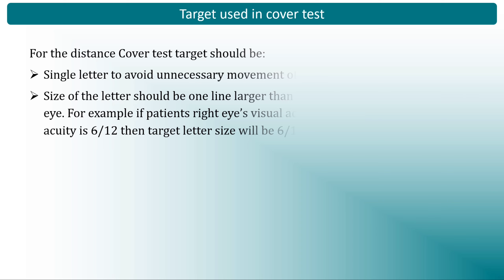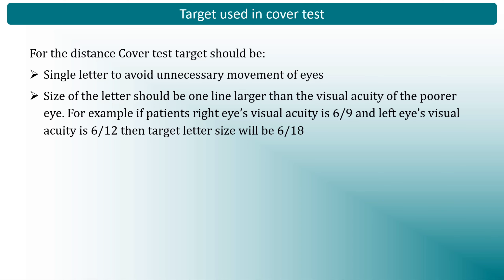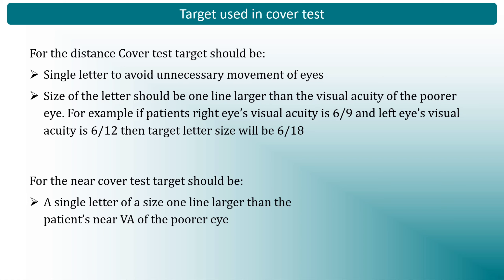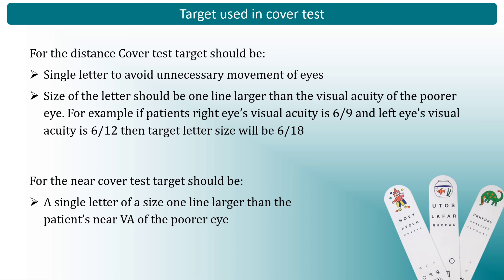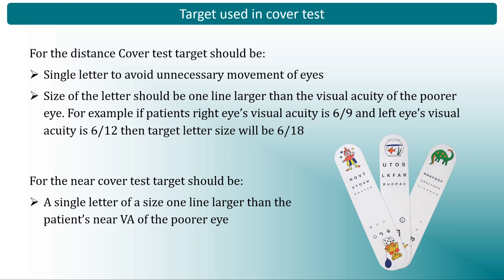For the distance cover test, the target should be a single letter to avoid unnecessary eye movements, and the size should be one line larger than the visual acuity of the poorer eye. For example, if the right eye's acuity is 6/9 and the left eye's acuity is 6/12, the target letter size will be 6/18 — one line larger than the poorer eye. For the near cover test, the same rule applies: a single letter one line larger than the near visual acuity of the poorer eye, or a fixation stick containing letters or pictures of various sizes.